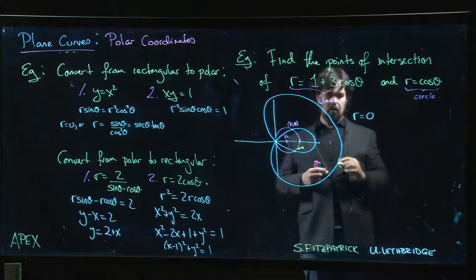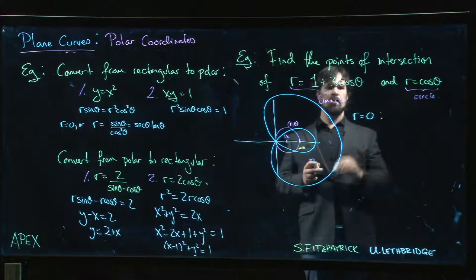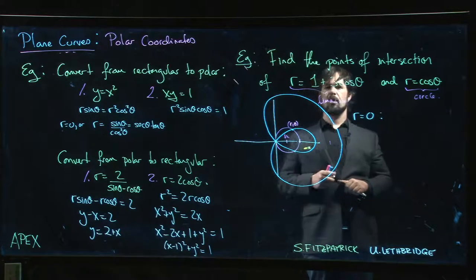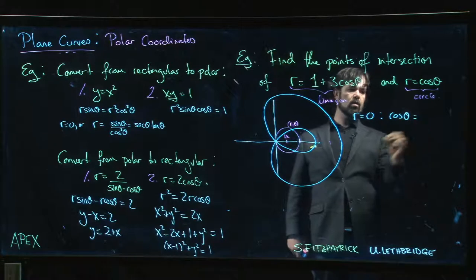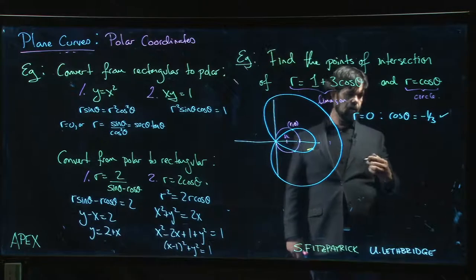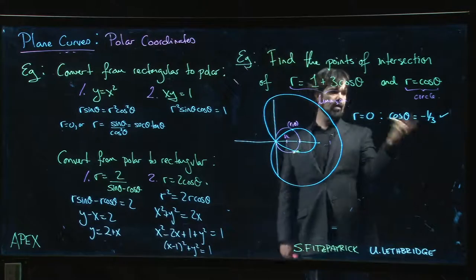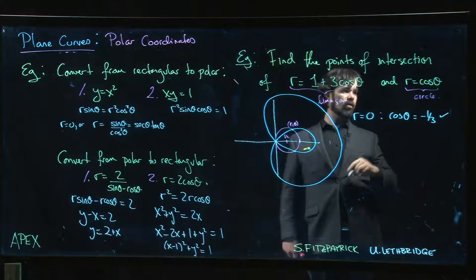For this one, I would need cos θ equal to minus one-third, and that works out—we can pass through the origin. For the circle, r = 0 certainly at π/2. cos θ = 0 at π/2. These are both possible.